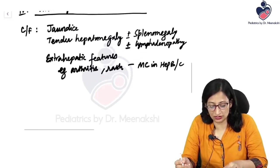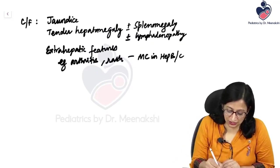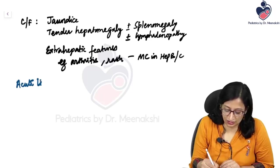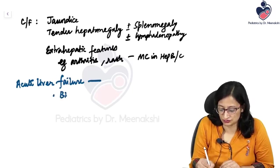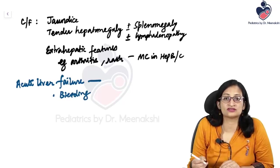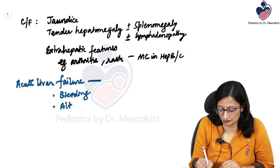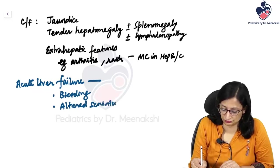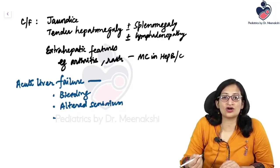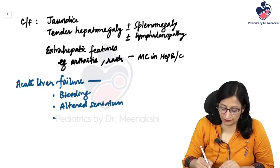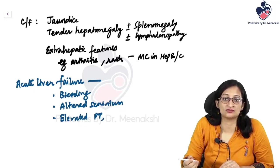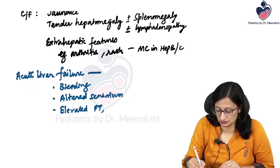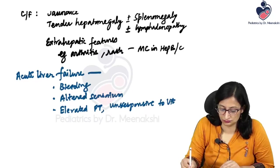If acute liver failure develops, children can have bleeding manifestations, altered sensorium, hyperreflexia, and unresponsiveness of prothrombin time to vitamin K. Elevated prothrombin time unresponsive to vitamin K indicates severe hepatic disease.